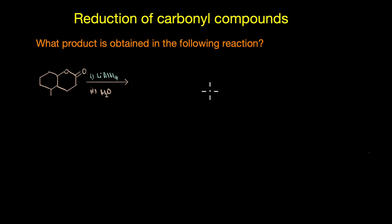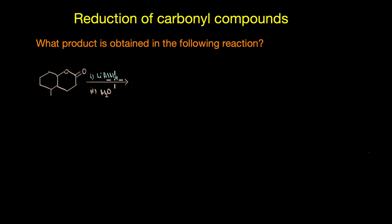In the first reaction we will understand the mechanism of this reduction. We need to figure out the product obtained when a cyclic ester is reacted with lithium aluminium hydride. Lithium aluminium hydride is the source of the hydride ion H⁻, which brings about the reduction. The first step involves the addition of H⁻ to the carbonyl group.